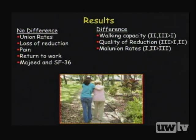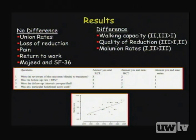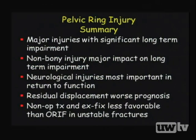The systematic review also assessed literature quality over 25 years and found quality scores improved, suggesting better outcomes research over time. In summary, pelvic ring injuries have bony and non-bony factors with significant long-term sequelae. Neurological injuries are the most important predictor for return to function. Residual displacement suggests a poor prognosis, and non-operative management and external fixation alone are less favorable than open reduction internal fixation for unstable fractures.